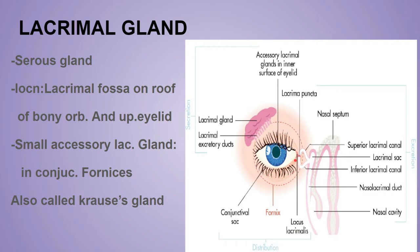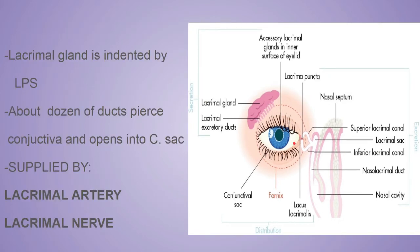The accessory lacrimal glands are present in the superior conjunctival fornix only — not in the inferior conjunctival fornix. Remember the location of the Krause gland is the superior conjunctival fornix only. This lacrimal gland is indented by the levator palpebrae superioris (LPS), which is an extra-ocular muscle supplied by the 7th cranial nerve.